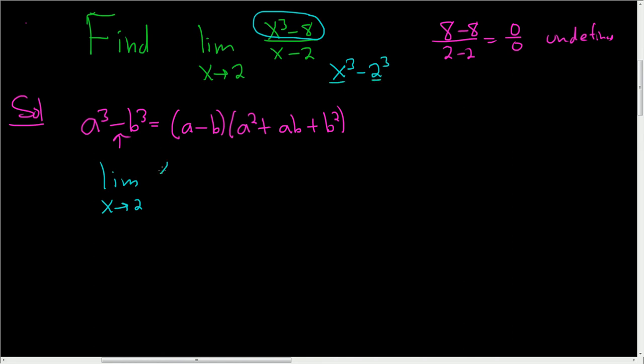So it's going to be x minus 2, and then parentheses, x squared plus ab. So in this case, it's simply 2x, and then plus b squared, which is 4. All divided by x minus 2.